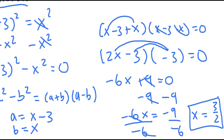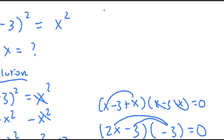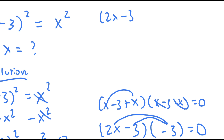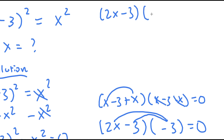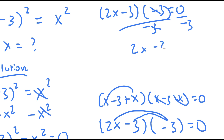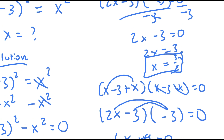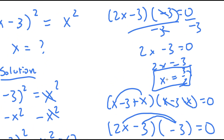Another way to do this: I have 2x minus 3 times negative 3 is equal to 0. I can divide both sides by negative 3, so I get 2x minus 3 is equal to 0, then 2x is equal to 3, and x is equal to 3 over 2. So those are two different approaches, and 3 over 2 is my solution.